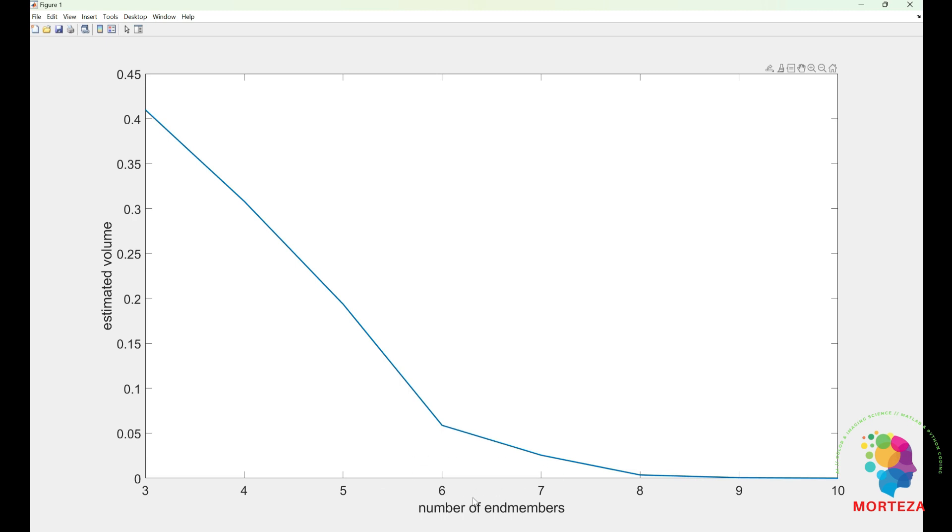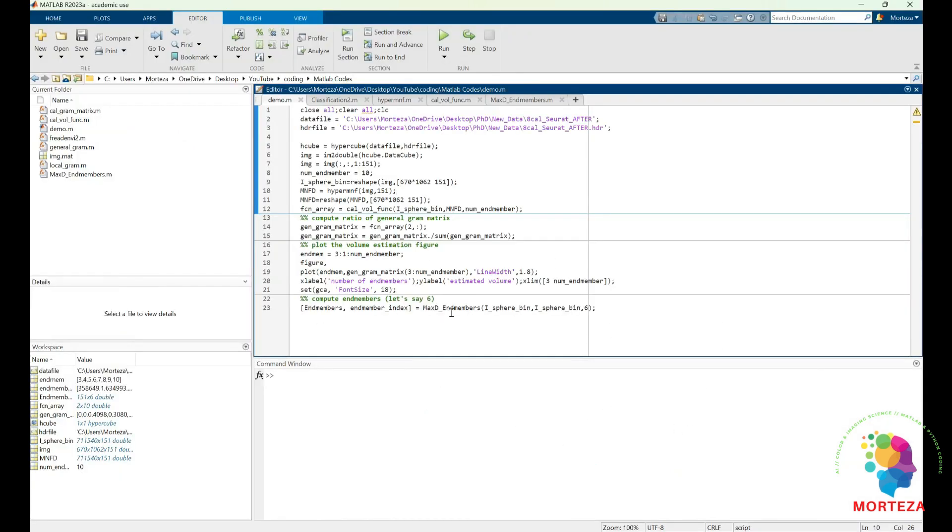And using ten endmembers would be meaningless because the tenth one is a combination of the nine endmembers here. So using this, I know that I have nine endmembers because it's not quite zero at eight and it is zero at nine. So I could use these nine endmembers to classify my image. I have already saved the nine endmembers and I'm going to use them to classify the image.